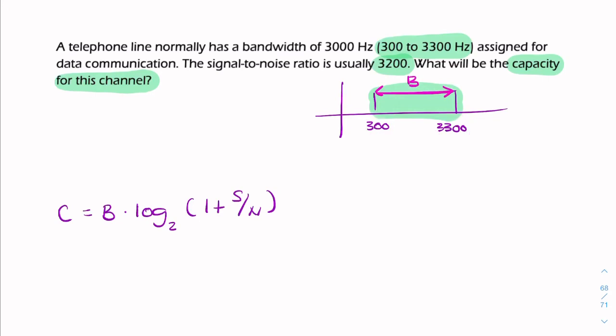So our B is 3000, and the signal-to-noise ratio is given in the question as 3200. We can simply multiply those, so it's 3000 times log to the base 2 of 3201.